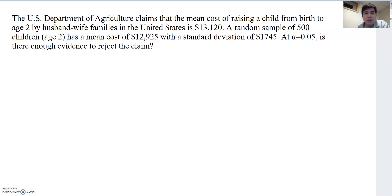The U.S. Department of Agriculture claimed that the mean cost of raising a child from birth to age 2 by husband-wife families in the U.S. is $13,120. A random sample of 500 children has a mean cost of $12,925 with a standard deviation of $1,745. At α=0.05, is there enough evidence to reject the claim?